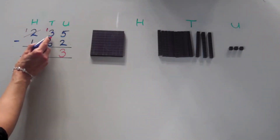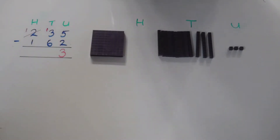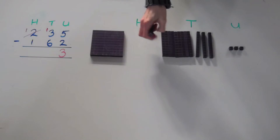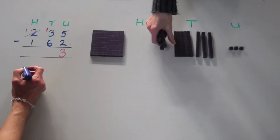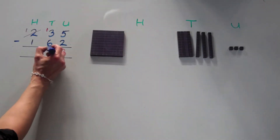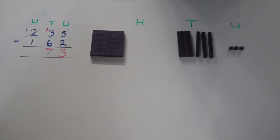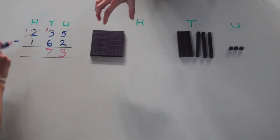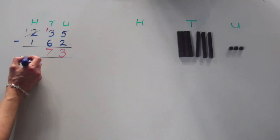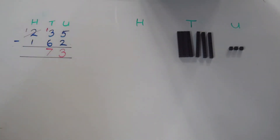My tens column now looks like thirteen. I can now take six away from thirteen, and that leaves us with seven. Now we just need to do the hundreds column. I now have one hundred in the hundreds column after the exchange, and I need to take away one hundred. One hundred take away one hundred is zero. So my answer is seventy-three.